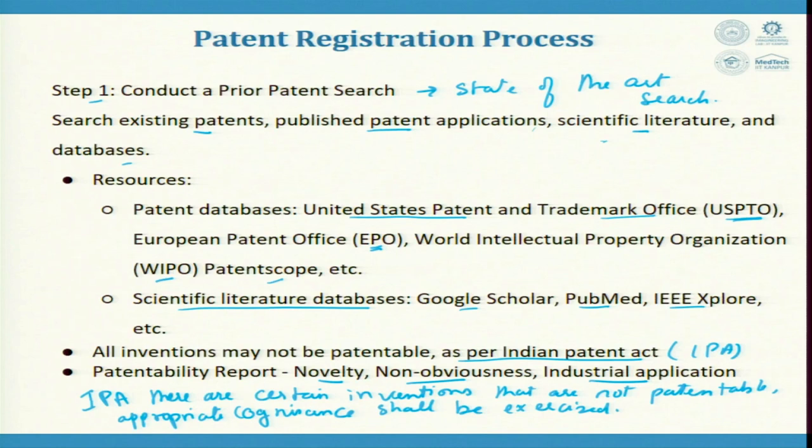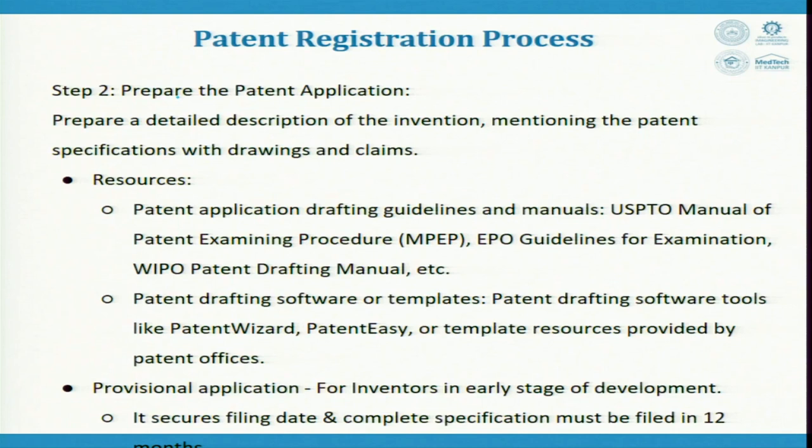Step 2 is to prepare the patent application. Prepare a detailed description of the invention, mentioning the patent specification with drawings and claims. A patent application is not easy to file. You can write it like a research paper: abstract, introduction, experimental procedure, description of claims, results, and conclusions.